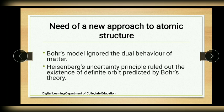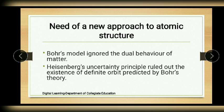The main reasons for the failure of Bohr's model are as follows. First, Bohr's model ignored the dual behavior of matter — it considered the electron only as a charged particle moving in a definite orbit, and the wave nature of the electron was not considered at all. Second, the Heisenberg uncertainty principle ruled out the existence of a definite orbit, since an orbit requires both position and velocity of the electron to be known exactly at the same time, which is not possible.